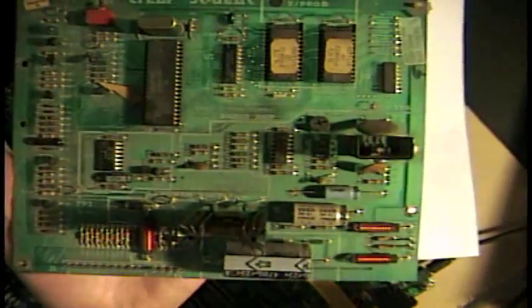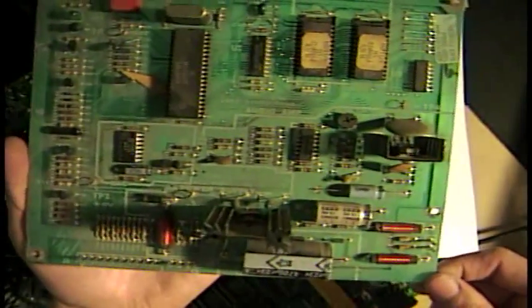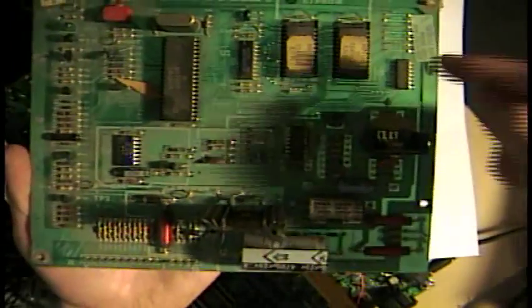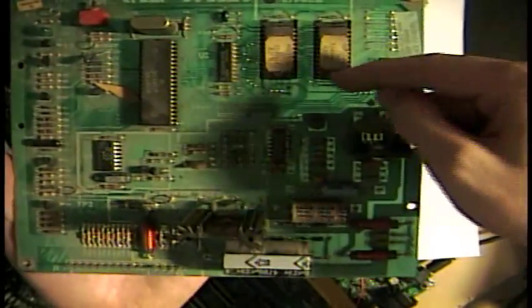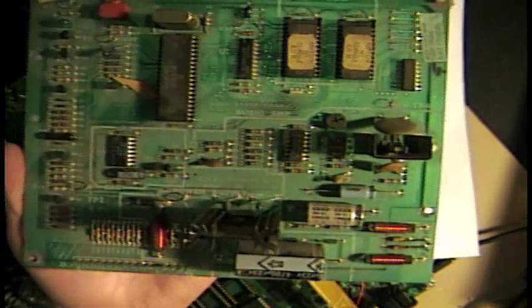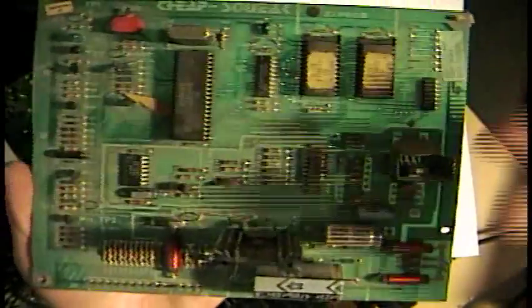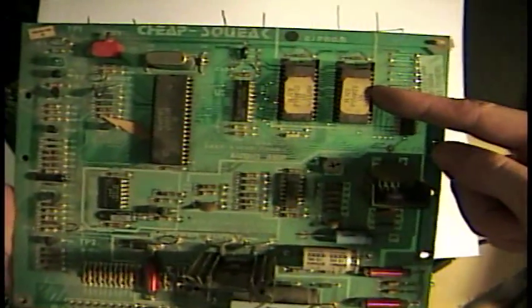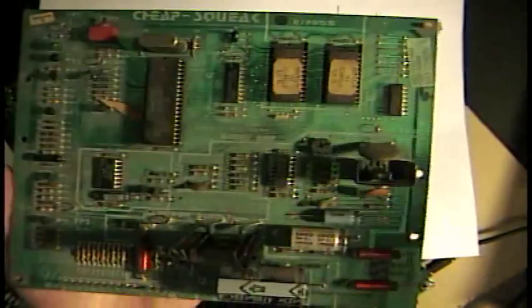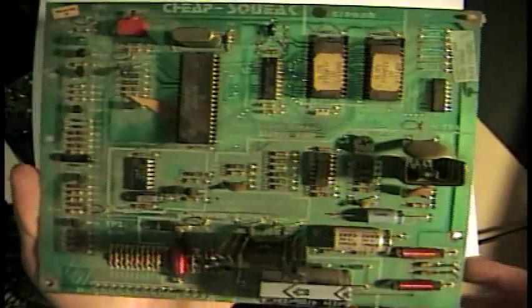So when you're having trouble with these boards that don't come up at all, I always go straight for the address and data bus to these memory chips and just see what they look like, see if they're toggling at all. Because when a processor is running a program, these lines will be toggling a lot, because it will be going through various loops, and you'll be able to see that.